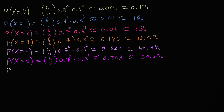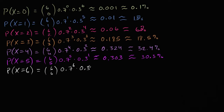The probability of making all six is equal to six choose six, times 0.7 to the sixth power, times 0.3 to the zeroth power. Six choose six is one and 0.3 to the zero is one, so it's just 0.7 to the sixth power, which is approximately 0.118, or 11.8%.